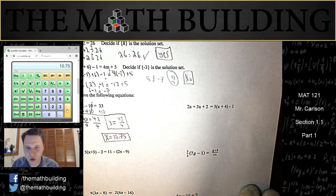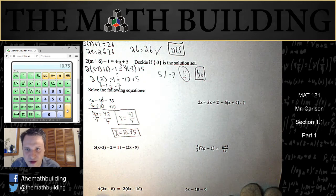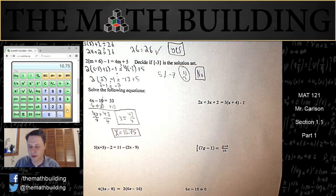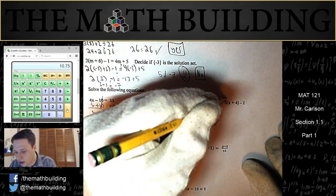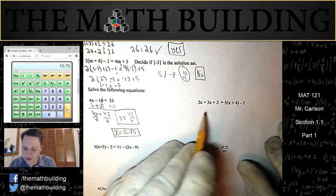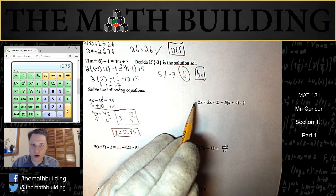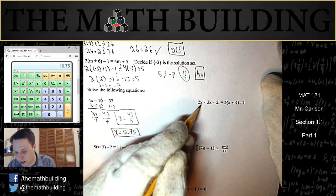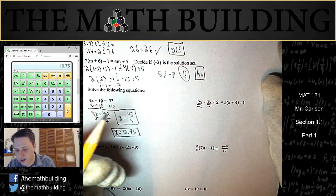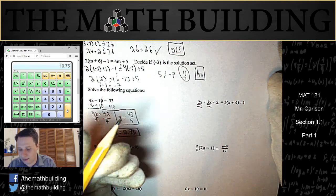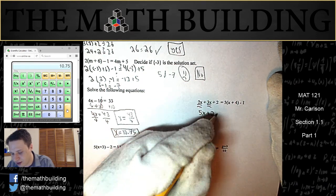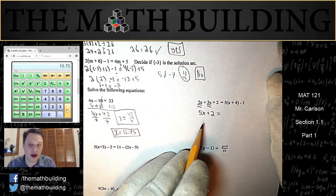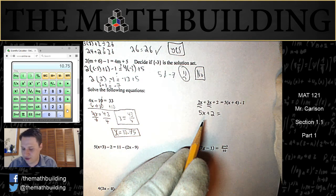Let's do the next one. We have 2x plus 3x plus 2 equals 5 times x plus 4 minus 1. This equation is a little bit more complicated because we have more terms, but we can solve it. On the left hand, when you have multiple terms on both sides, first you want to try to simplify both sides of the equation. So combine 2x and 3x on this side. Those are like terms that can combine, so those combine to 5x plus 2. The left side will not simplify any further after this.